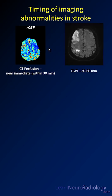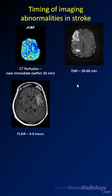The next thing that really becomes abnormal is diffusion. Diffusion on MRI should become abnormal within the first 30 to 60 minutes. That's because you start to have the ATPases fail and water and ions moving into cells.